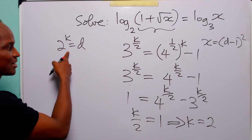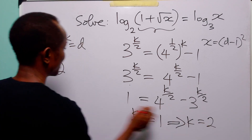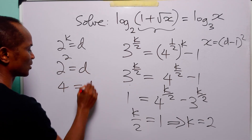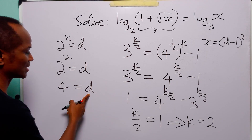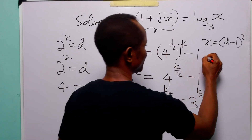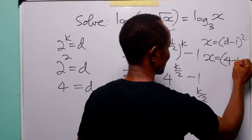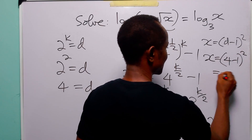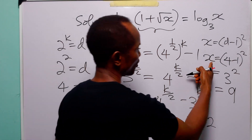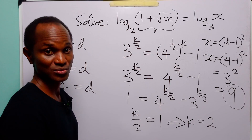Now we go back to the earlier equation to find the value of d. We have that two to the power two is equal to d, so d equals four. Now we go back to find the value of x: x is equal to (d minus one) squared, that is (4 minus 1) squared, equal to three squared, which is equal to nine. So the value of x that satisfies this logarithmic equation is equal to nine.